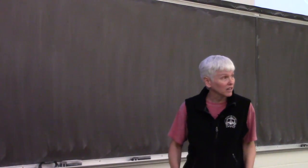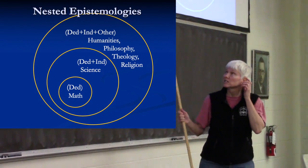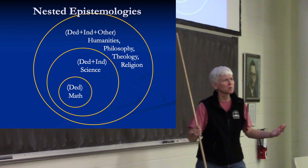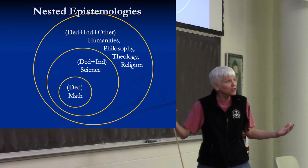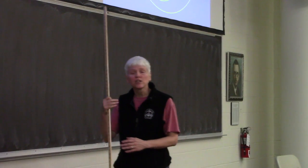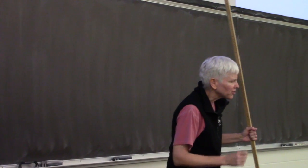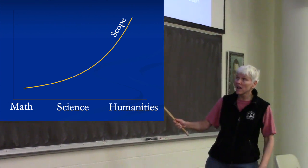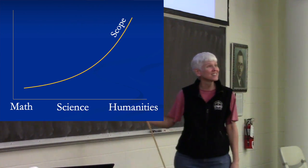Mathematics is pure deduction. Science is deduction and induction. And then there's a whole other world that involves other ways of knowing as well — the humanities, philosophy, theology, religion. To summarize scope: as we move from math to science to the humanities, the scope of questions that can be addressed rises dramatically. Math can't tell us new information about the physical world; science can, but cannot address questions of meaning; humanities can address questions of meaning.